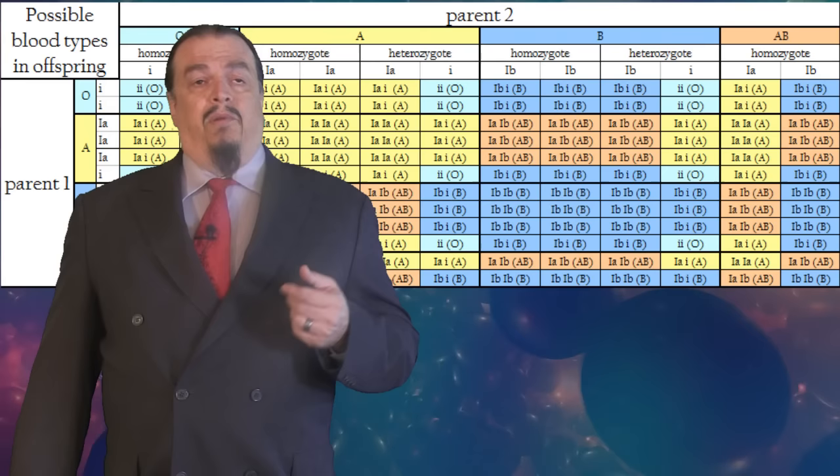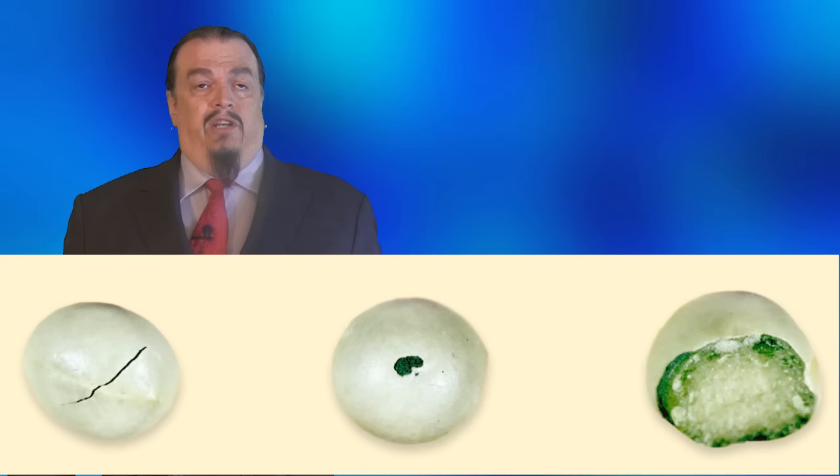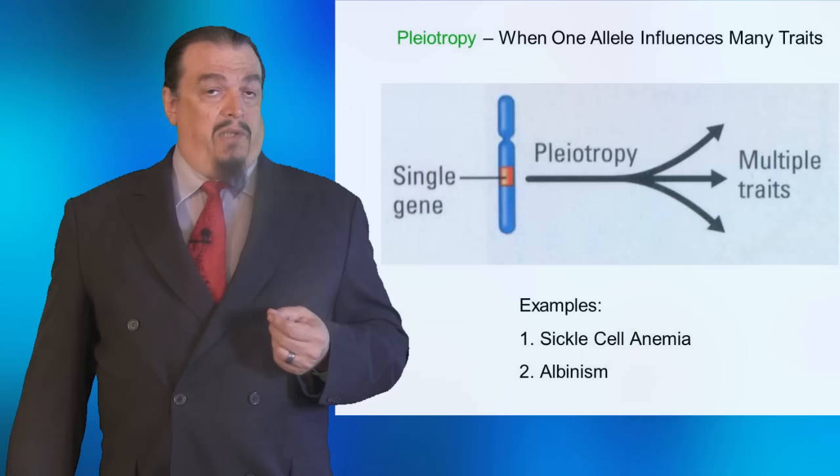Moving along, blood type is determined by just one gene. But genetics is more complicated than that. Although Mendel studied more simple traits, even he noticed that genetics are not that simple. Mendel noticed that pea plants with white flowers had white seed coats and that was different from other flower colors. He inferred, correctly, that one gene can have an effect on more than one trait. This is called pleiotropy.